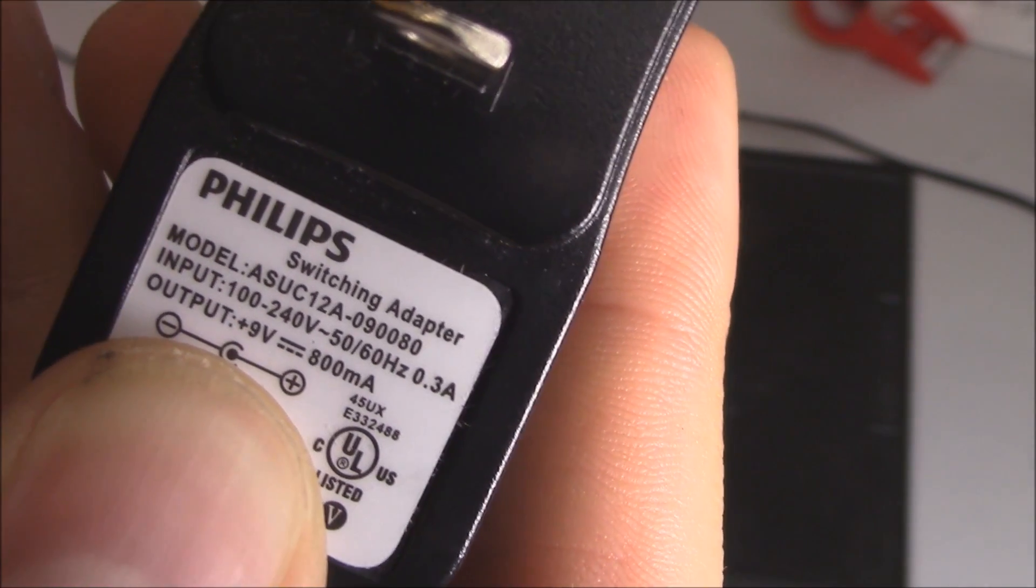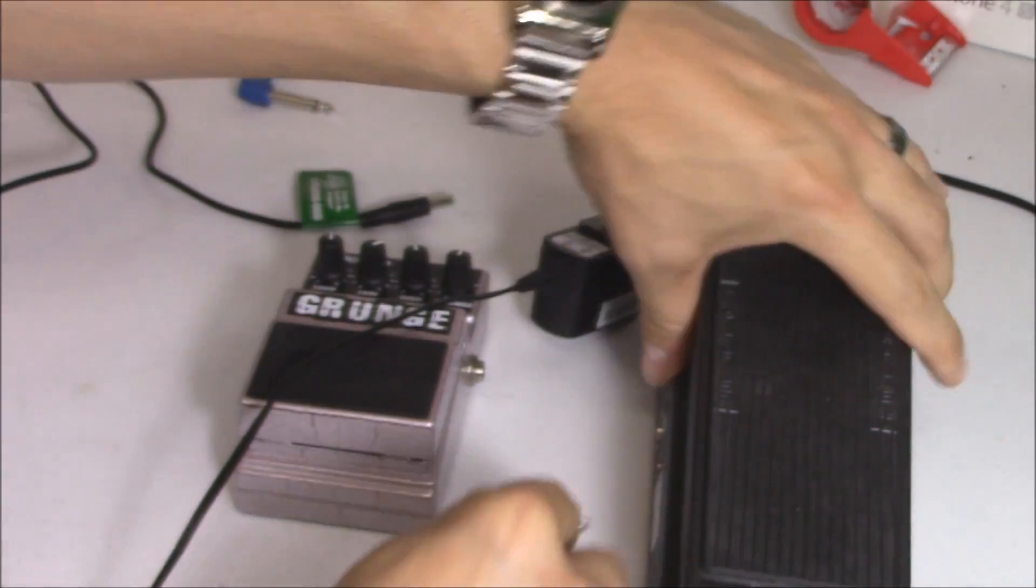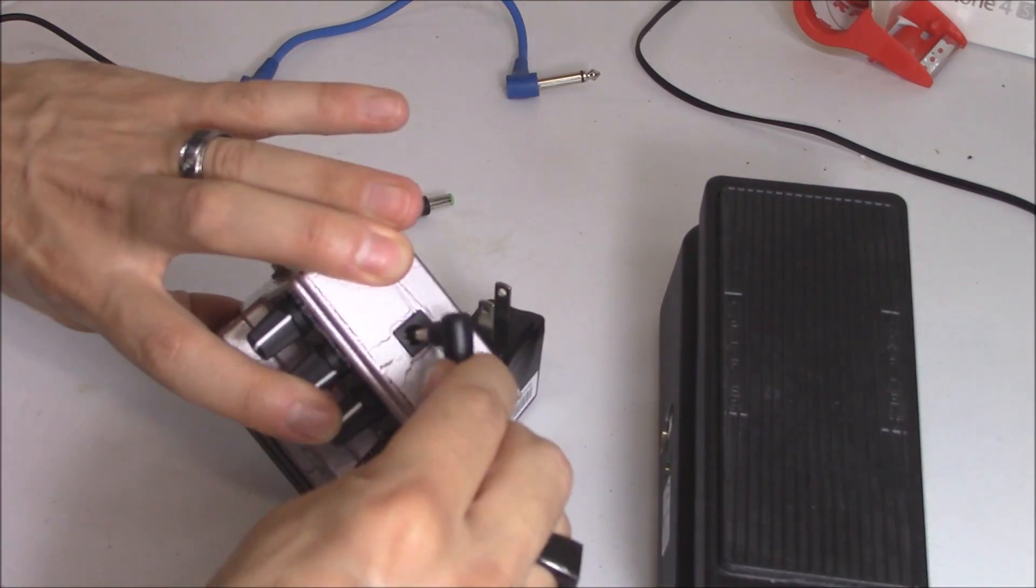So on this AC charger, it's 9-volt, 800 milliamp. And that's pretty much what this and this take. So I'm going to use this AC adapter, but it has the wrong end. See how the end is small? Well, I can't fit it in there. It doesn't fit. And it doesn't fit in here either.